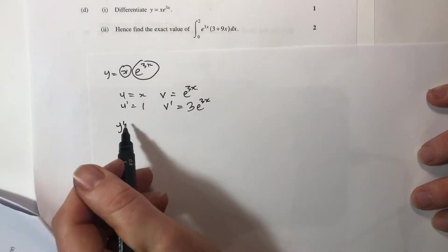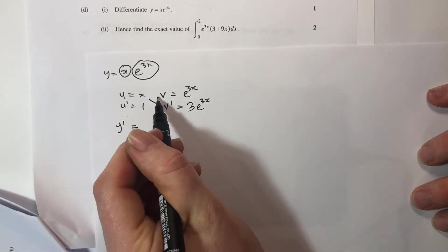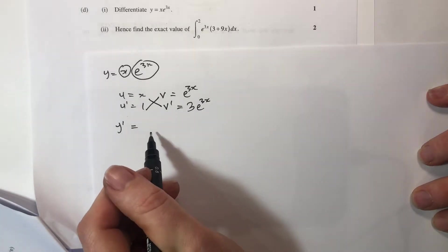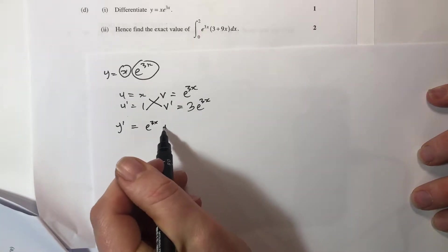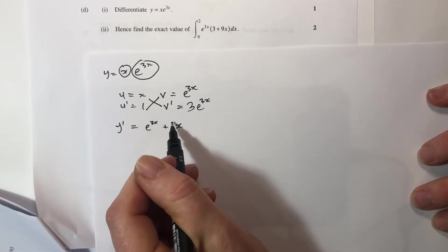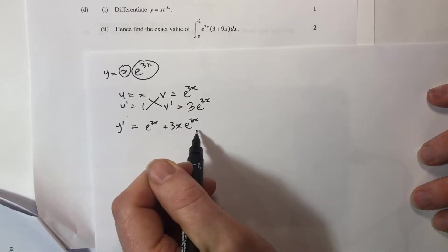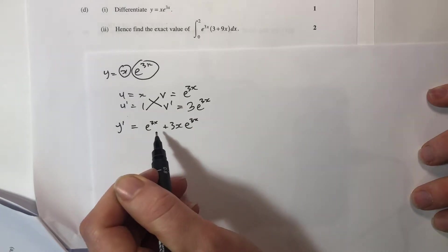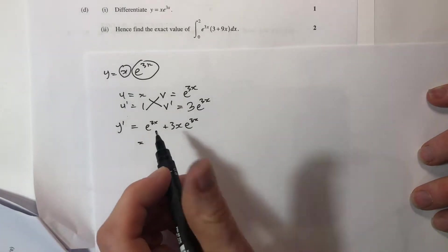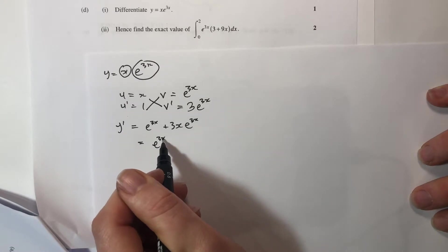y dash is going to be the product of these guys added together, so e to the 3x plus x times 3e to the 3x. When I'm multiplying these together I can simplify as I go. I could factorize this: e to the 3x times (1 plus 3x) if I take that common factor out.